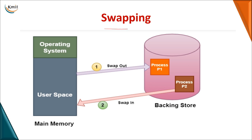Moving on to swapping — as the name implies, the general meaning of swapping is moving from one place to another. The basic need for swapping in an operating system arises because one part of main memory is stored with the operating system, and the remaining part is utilized for storing processes or programs. For a program to be executed, it must be present in main memory.